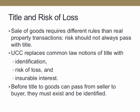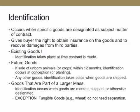Title and risk of loss. Sale of goods requires different rules than real property transactions. Risk should not always pass with title — sometimes property may be in someone else's hands, but the risk of loss may still be with the other party. Title and risk of loss typically go together, but the parties can agree when title and risk of loss passes. The UCC replaces the common law notions of title with identification, risk of loss, and insurable interest. Before title can pass from seller to buyer, the goods need to exist and be identified. Identification occurs when the specific goods are designated as the subject matter of that particular contract and gives the buyer the right to obtain insurance on the goods and to recover damages from a third party.